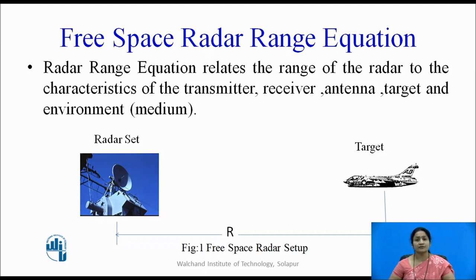The basic function of the radar is to determine the range of the target. Let us see how this range of the target is derived. What is exactly a free space? It is assumed that a target and the radar are located in free space, meaning there are no interruptions or obstacles between the transmitter of the radar and the target — it is an empty space, and signals transmitted from the transmitter travel directly towards the target.